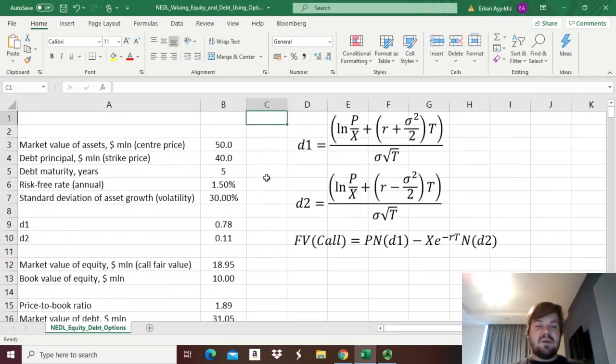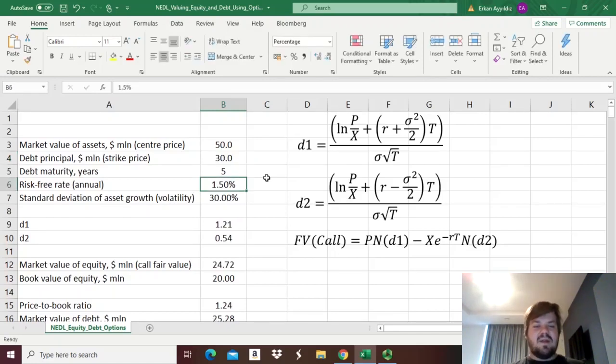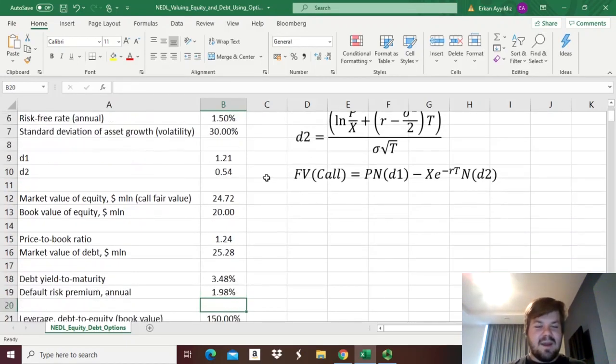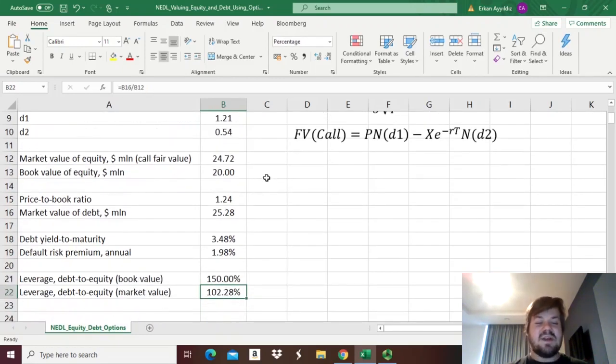Finally, let's just do some comparative statics. Let's assume that the company is actually less levered, let's assume that its debt is just 30, so it funds its current activities to a greater extent using equity, than in the previous example. That would give us the fact that the price-to-book ratio will drop to 1.24% from almost 2%, which means that the company is less risky, ultimately, and its default risk premium will also drop significantly, which is something that we would expect in such a scenario.